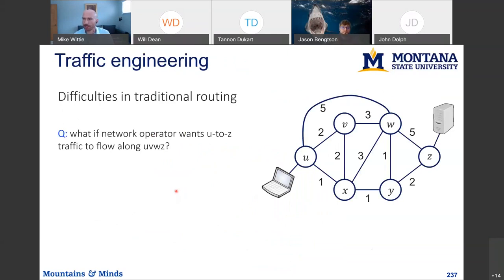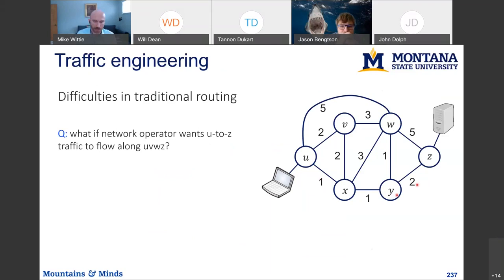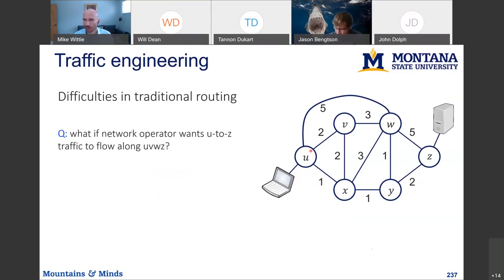Let's look at some scenarios where this approach doesn't quite work. On the right, we have a prototypical network. Using a routing approach, you might find the shortest path between U and Z going through X and Y. But now let's say the operator wants to forward the traffic on a different path through V and W. Using the traditional routing approach, the operator would not be able to do that because the routing algorithm would pick the shortest path. But let's say this path becomes congested — it's still the shortest path in terms of hops, but no longer in terms of delay. The operator might want to send the traffic onto a different route.